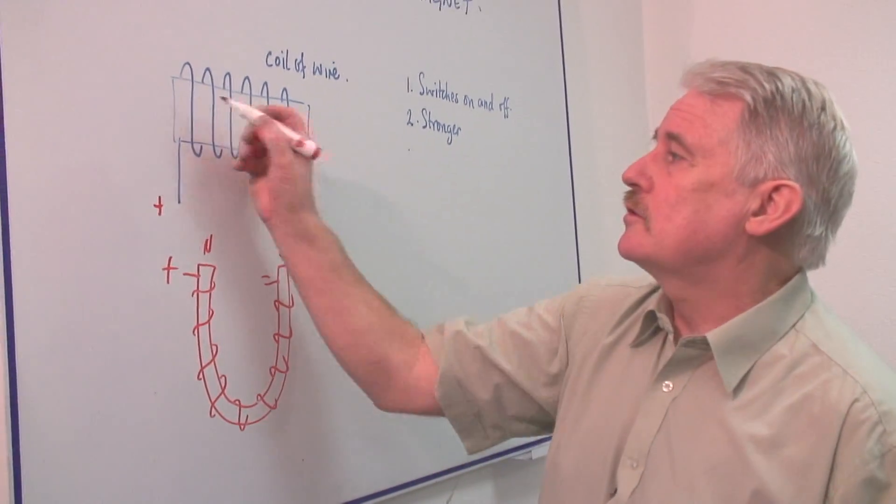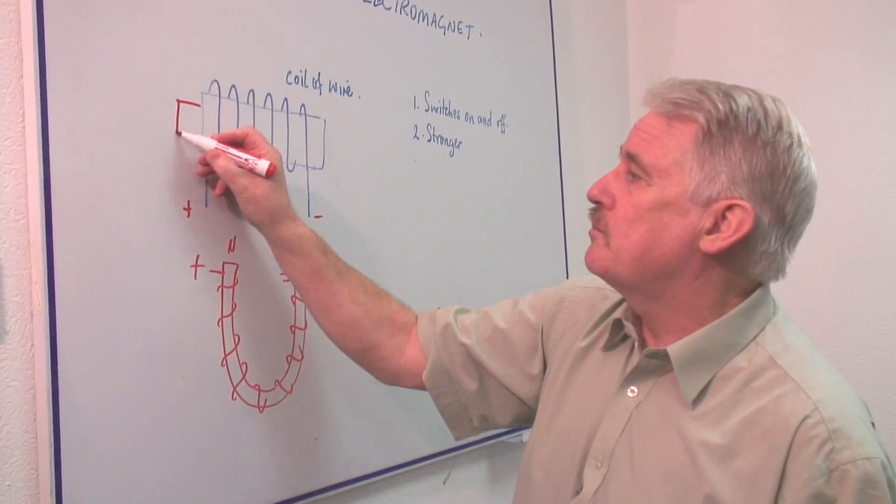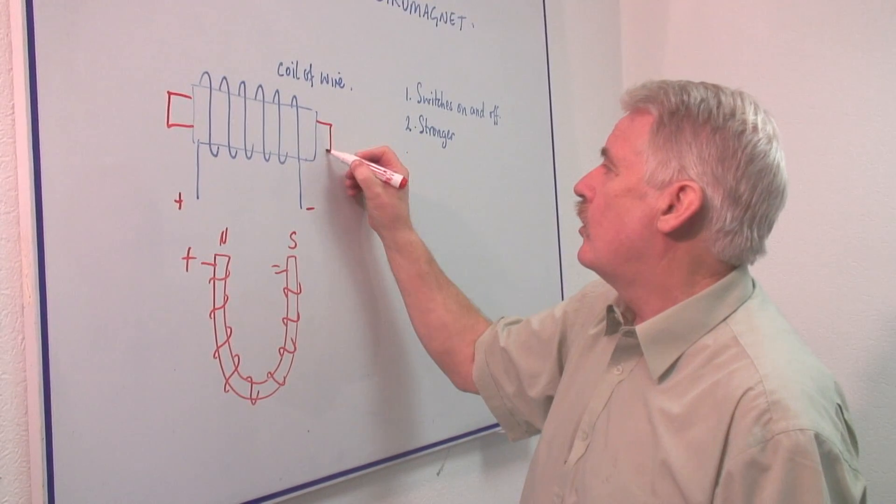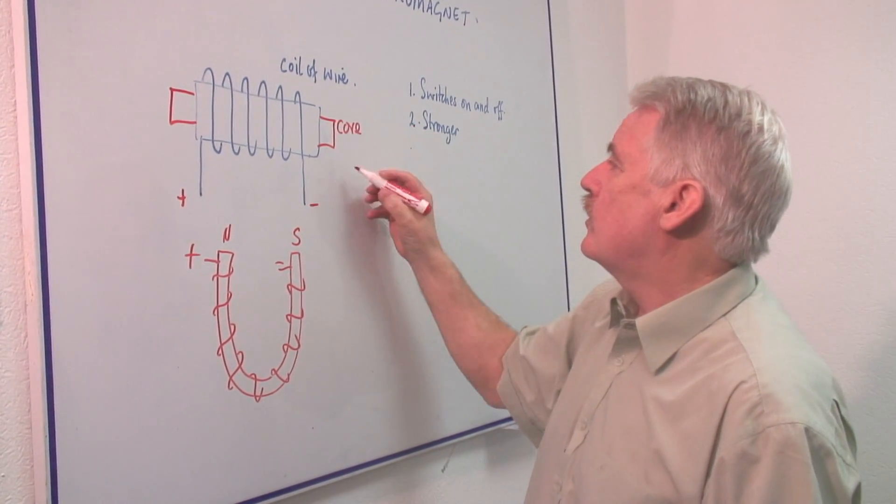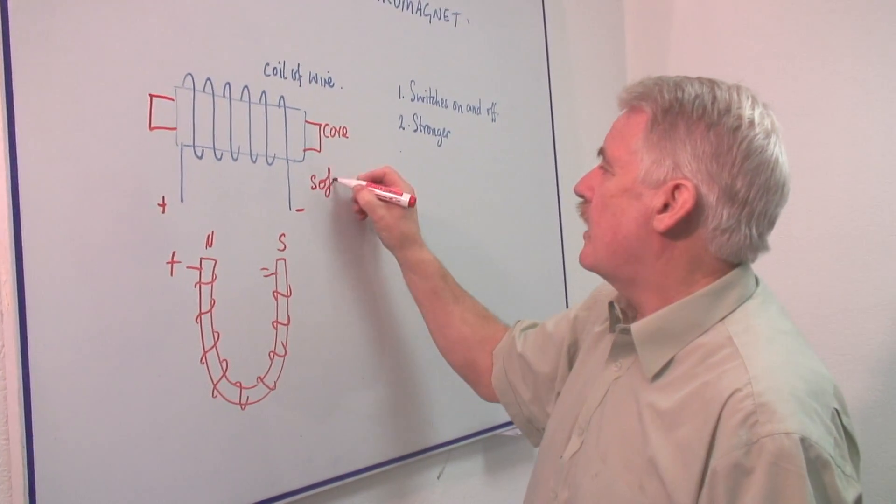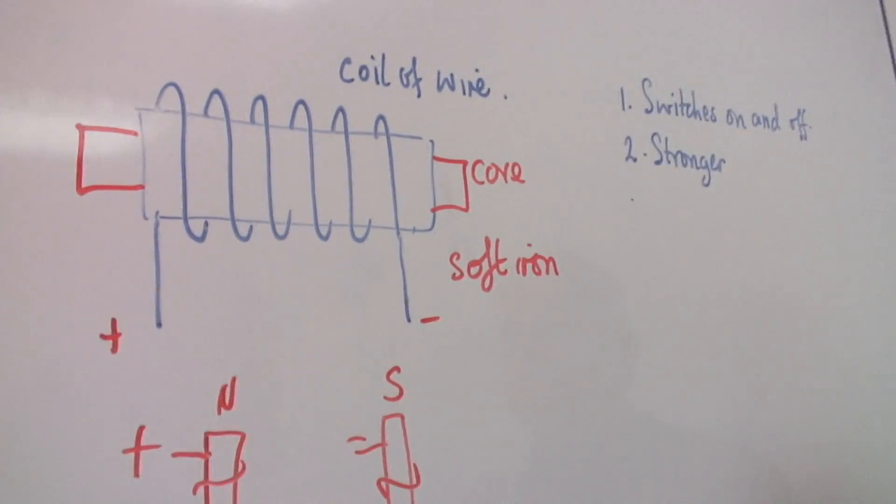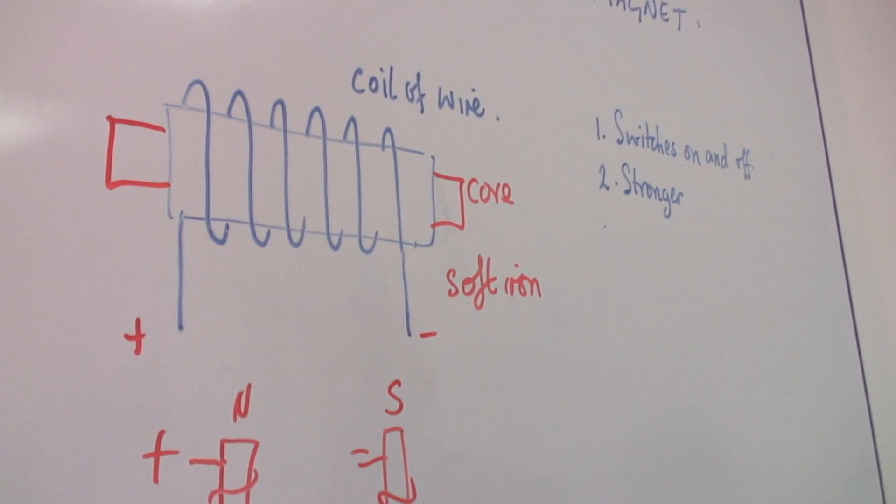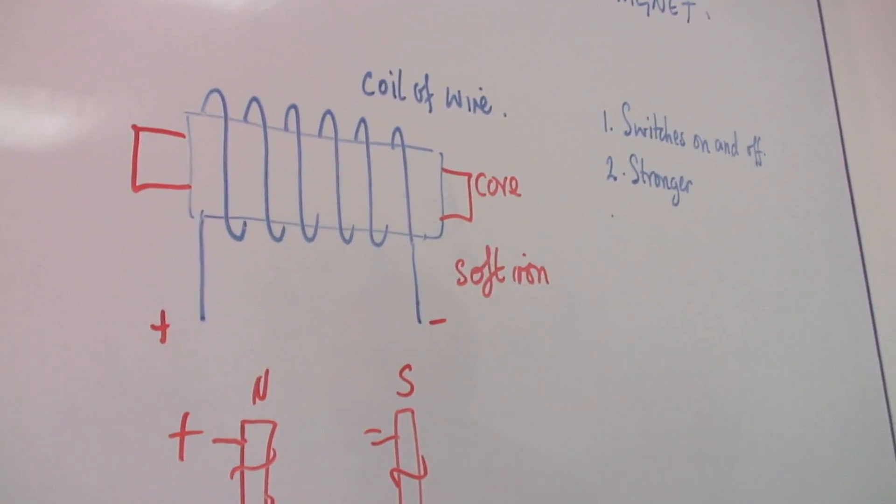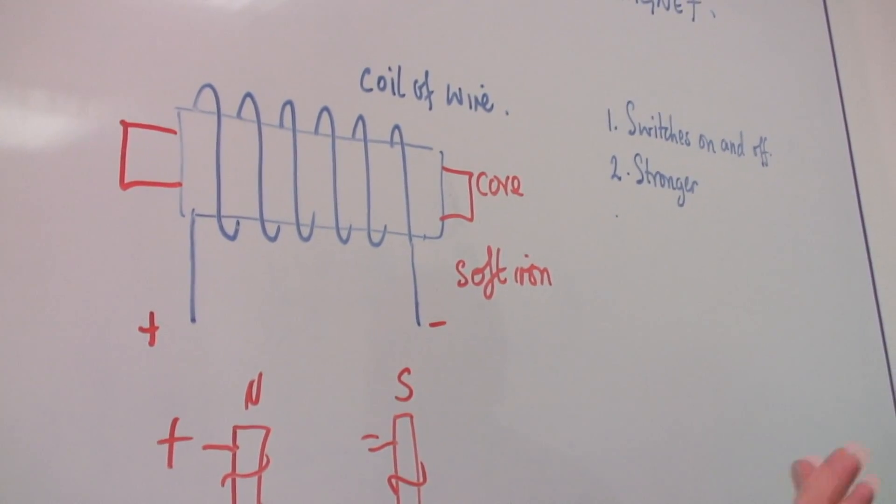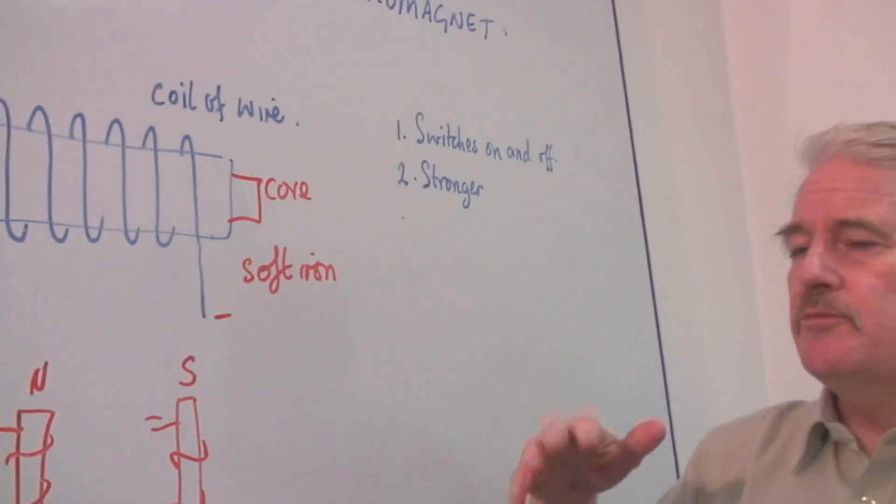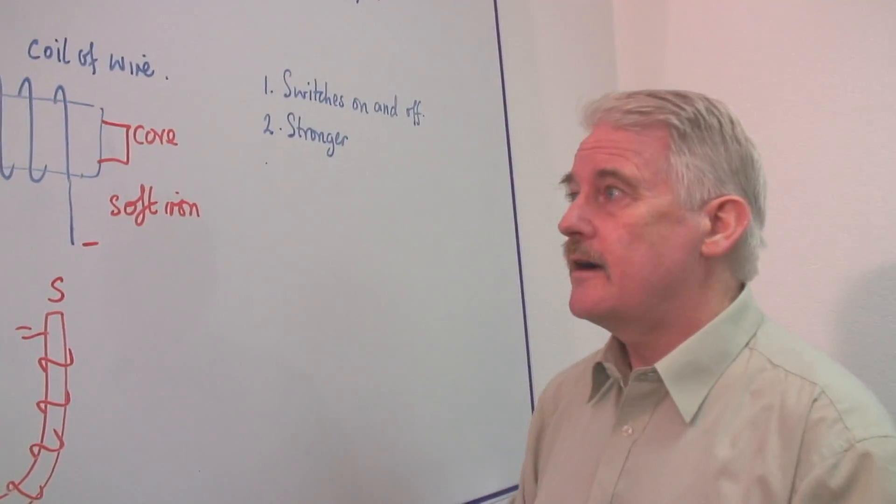What is always important is that normally we put in a core, and the core is made of soft iron. That is iron which is easily magnetized and demagnetized. You don't want a steel core because that will become magnetic and stay magnetic. You want a soft iron core that will magnetize and demagnetize.